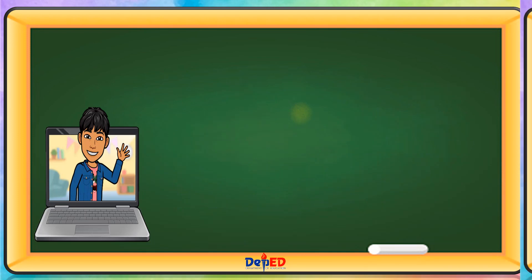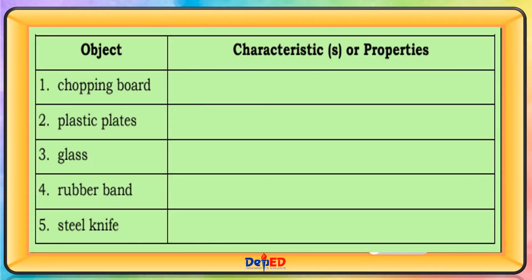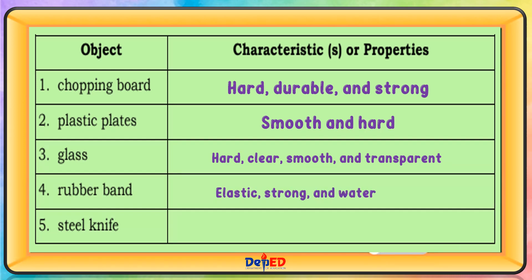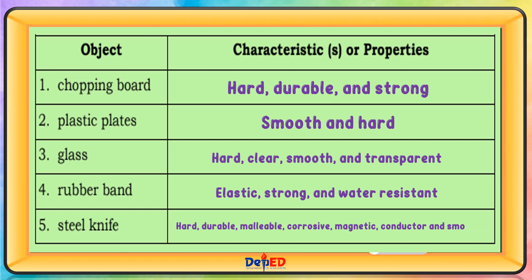Object: Chopping Board — Characteristics or Properties: Hard, Durable, and Strong. Plastic Plates — Characteristics or Properties: Smooth and Hard. Glass — Characteristics or Properties: Hard, Clear, Smooth, and Transparent. Rubber Band — Characteristics or Properties: Elastic, Strong, and Water-Resistant. Steel Knife — Characteristics or Properties: Hard, Durable, Malleable, Corrosive, Magnetic, Conductor, Smooth.